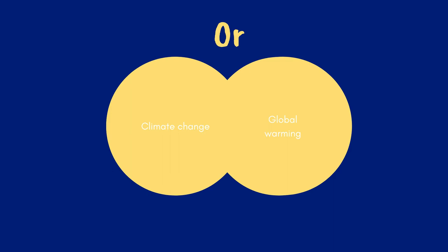An example of a search where OR could be useful is if I wasn't sure whether "climate change" or "global warming" was the preferred terminology. I could search for both combined with OR and receive all articles that mention either or both of those terms.